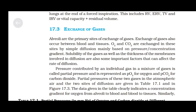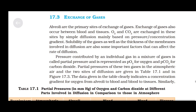Exchange of Gases: Alveoli are the primary sites of exchange of gases. Exchange of gases also occurs between blood and tissue. Oxygen and carbon dioxide are exchanged at these sites by simple diffusion, mainly based on pressure or concentration gradients. Solubility of gases and the thickness of the membranes involved in diffusion are also important factors. The pressure contributed by an individual gas in a mixture is called partial pressure — represented as PO2 for oxygen and PCO2 for carbon dioxide.